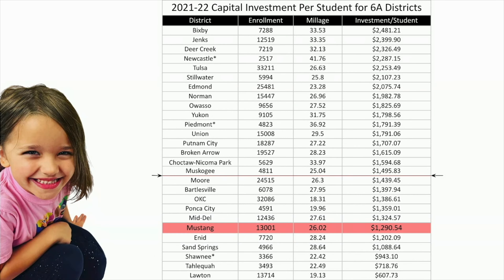In a nutshell, if you just look at Mustang, we spend $1,290 per student using bond dollars. This metric takes into account a district's millage and enrollment and comes up with a standard number of what they spend in bond dollars per student. If this bond issue were to pass and we move to 30 mills, you would see that we would be right above Moore and just below Muskogee in the amount of investment per student — the amount of bond money we have per student in Mustang.